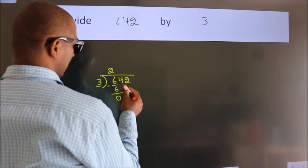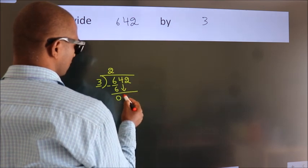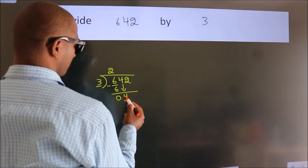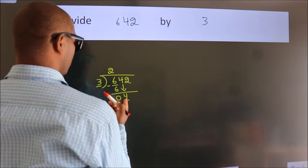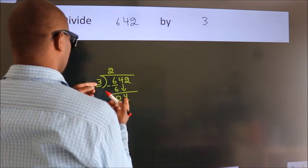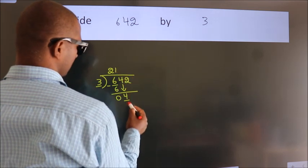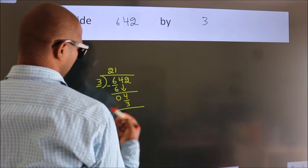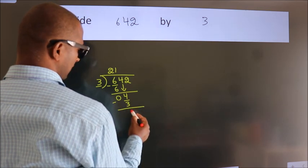After this, bring down the beside number. So 4 down. A number close to 4 in the 3 table is 3 times 1 equals 3. Now, we subtract. We get 1.